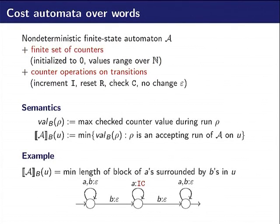So how does it work? There is a semantic called the B semantic. When we look at a run of such an automaton, we can look at all the checked values along the run and we just remember the maximum one to give a value to the run. The semantic of the automaton on word u will be the infimum of all the run values on this word.